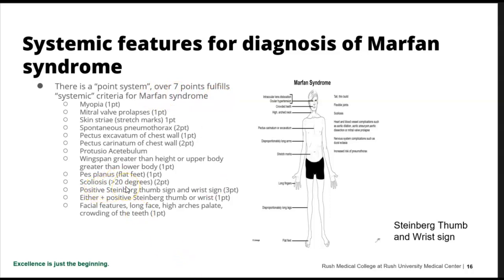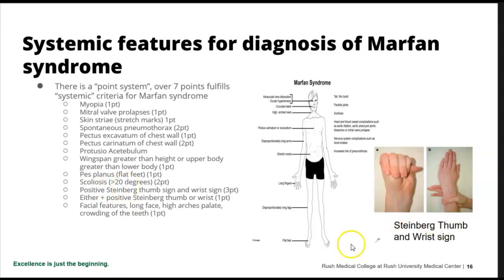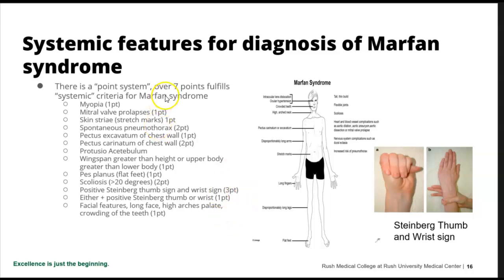Regarding the positive Steinberg thumb and wrist sign — remembering those long spidery fingers like Abraham Lincoln's — when you put your thumb across, if you have long fingers your thumb hangs out with overlap between the pinky finger and the thumb. When I give this lecture in person, there's always someone in the room who thinks they have Marfan syndrome because they can do this. But if you can do both, you get three points — and you need seven total. If you can do one or the other, you only get one point.